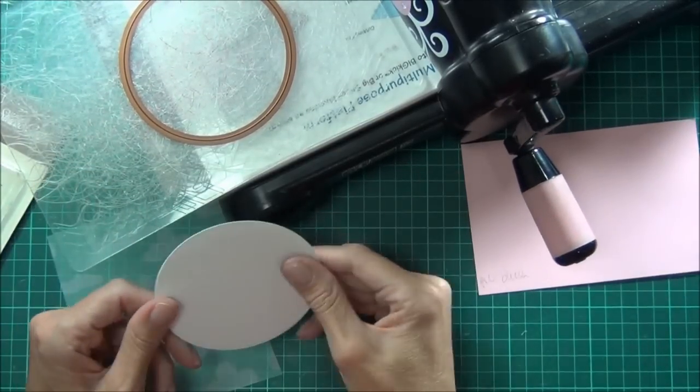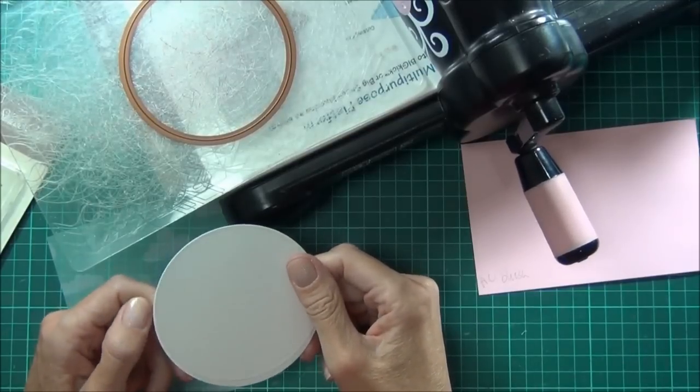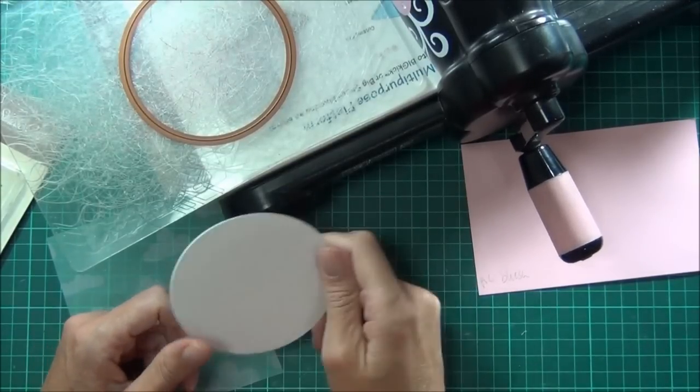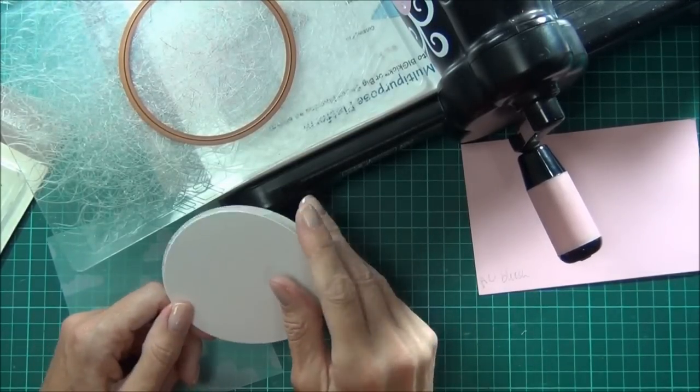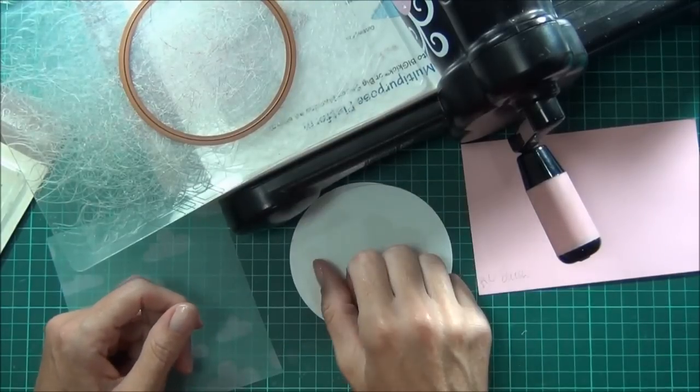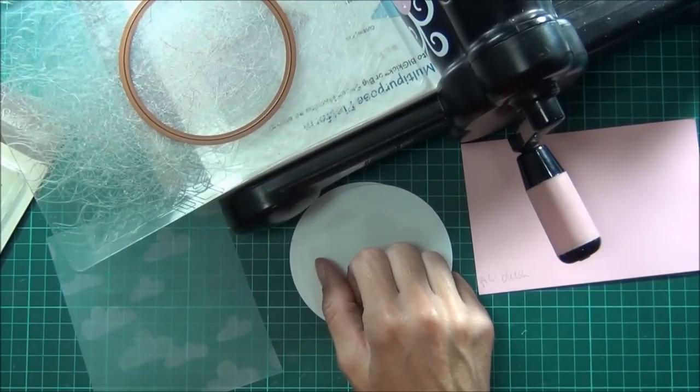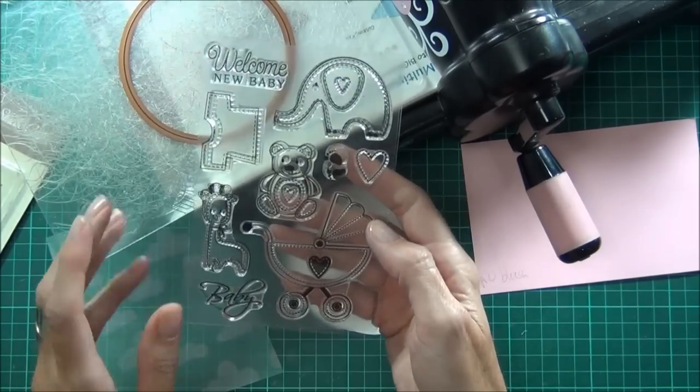I actually already had these die circles cut out to make another card that didn't go where I wanted it to, so I thought I'd just use those and make a circle baby card using the new baby stamp set from Hero Arts.